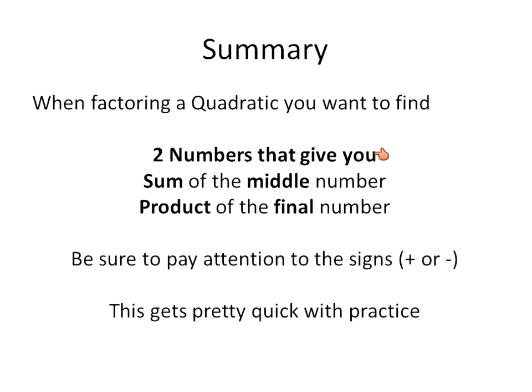Quick summary. When you're factoring a quadratic, you want to find 2 numbers that give you the sum of the middle number and the product of the final number. Make sure to pay attention to positive and negative signs. And this will get faster with practice. Once you start recognizing those factors, it will become pretty quick.